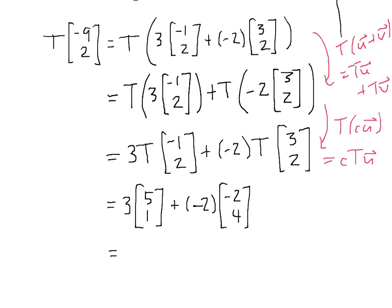We have 3 times 5 plus -2 times -2, so that will be 15 plus 4, so we get 19. And then for the second components, we have 3 plus -8, so we get -5.